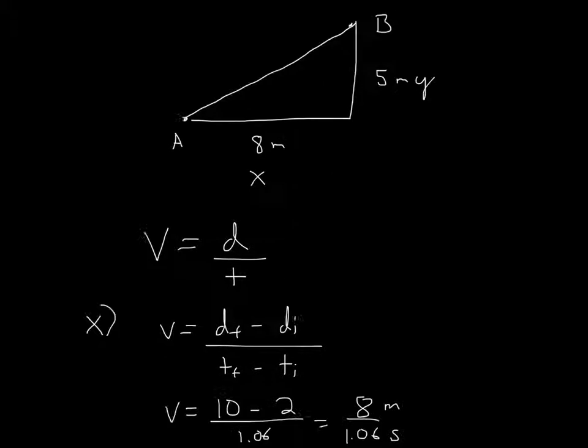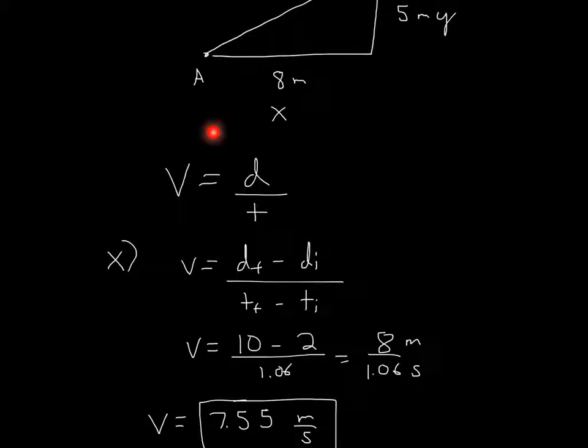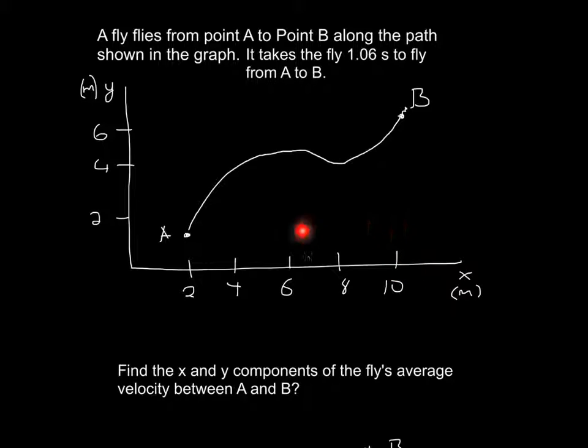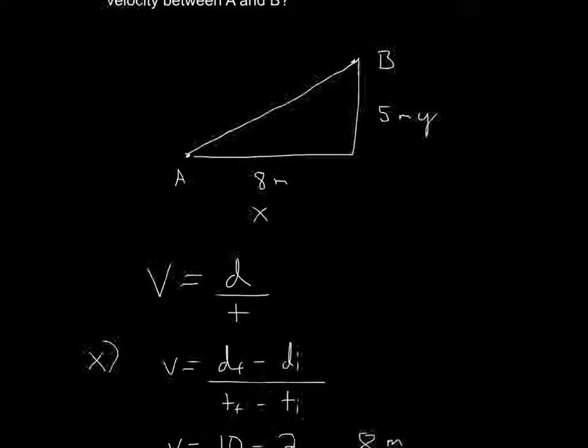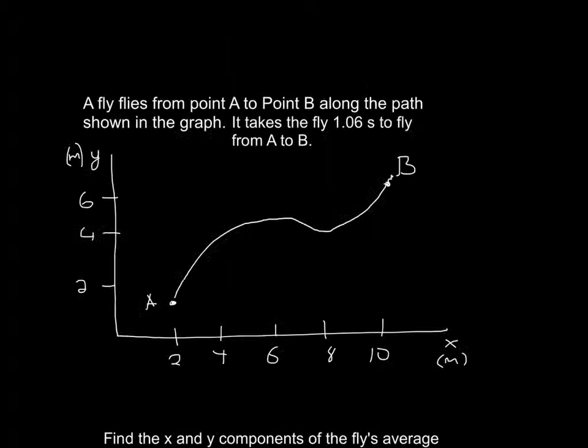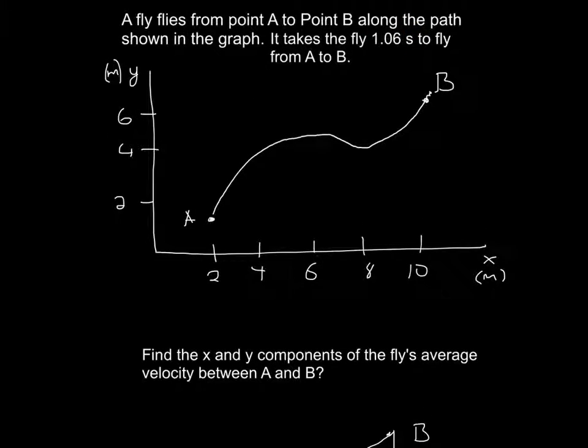And that's the formula for velocity. Because velocity is distance over time. It's going to be final distance minus initial distance, final time minus initial time. So it's going to be 10 minus 2 for the x part, because that's what it is, 10 minus 2 over time, which was given in the problem right here, 1.06 seconds.